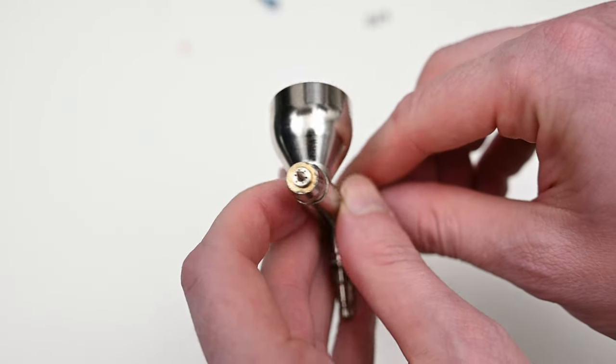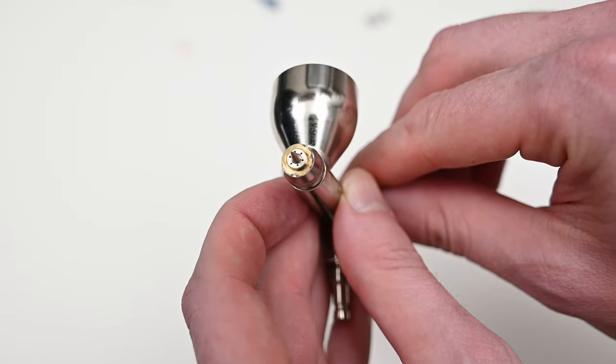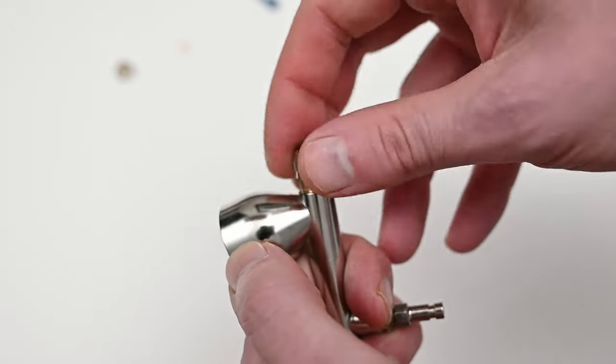Once this is removed we can see that the head cap has six holes in it to evenly spray that air over the needle and nozzle. And now after unscrewing this head cap we have easy access to the nozzle.